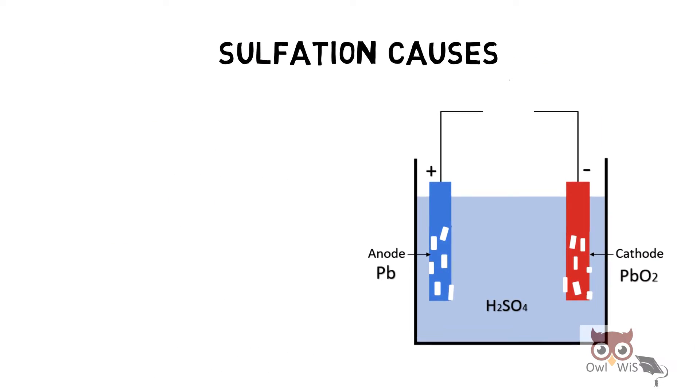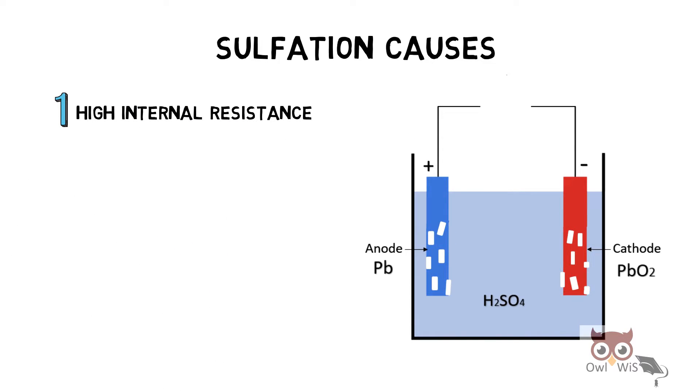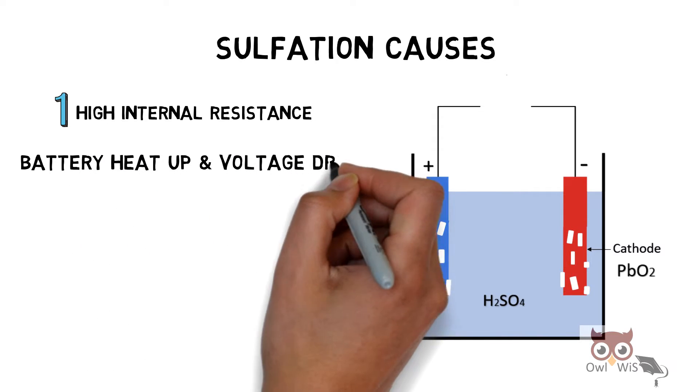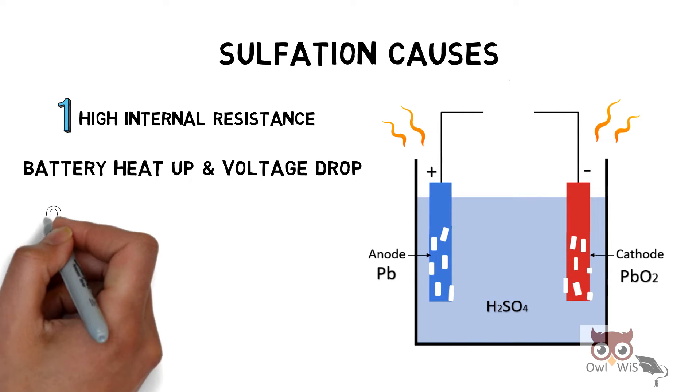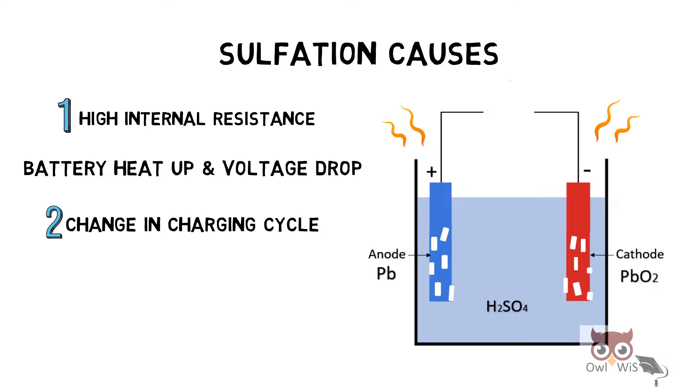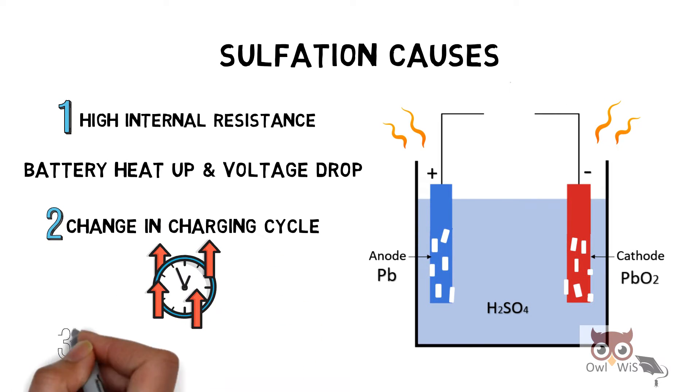Sulfation causes first high internal resistance, due to which the battery heats up and voltage drops. Next, change in charging cycle, so there is an increase in the charging time taken.